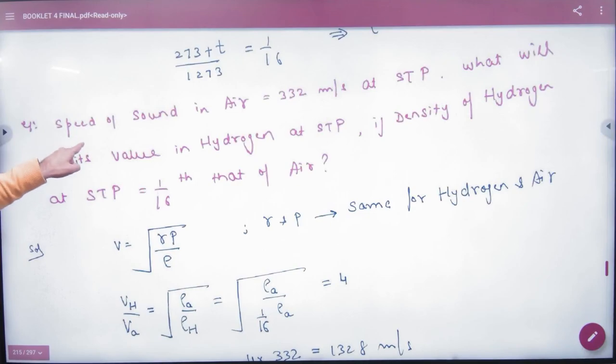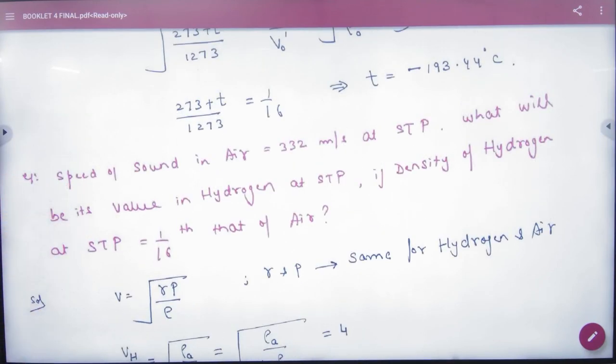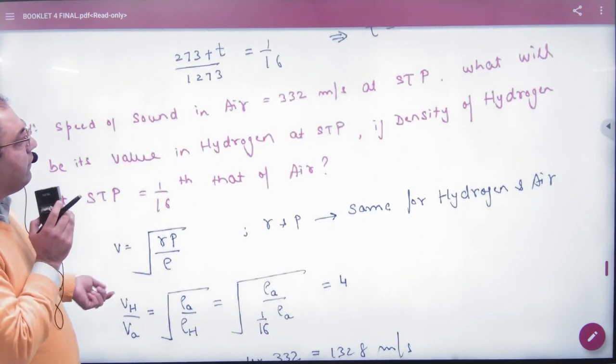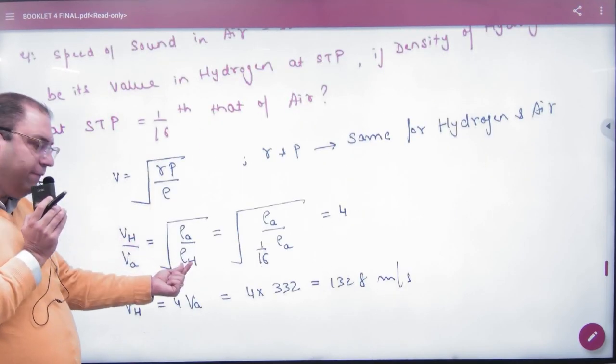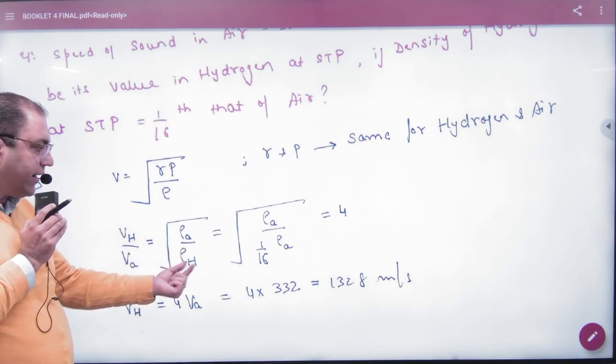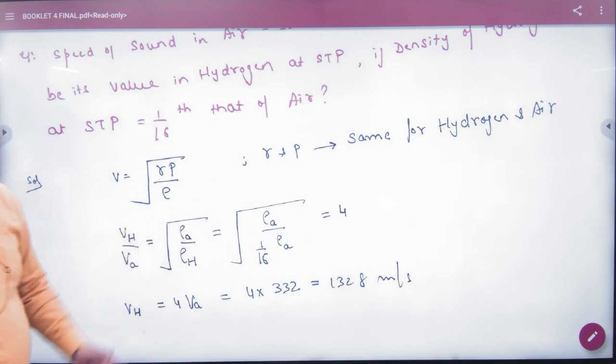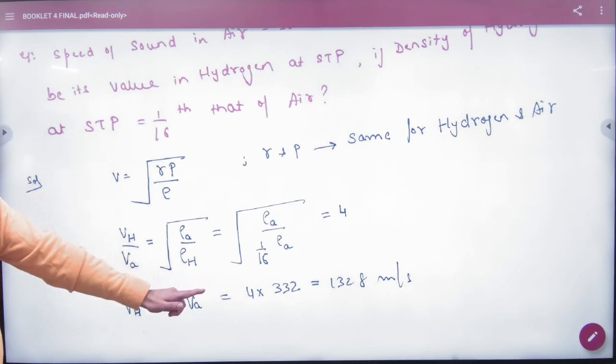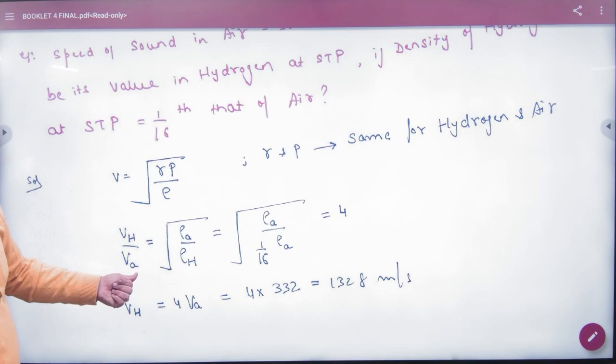To kaise temperature depend karna hai samajh mehra raha hai. Temperature se velocity kaise nikalegi clear hai. Question mein: jaise speed of sound in air given hai STP pe 332. What will be its value in hydrogen at STP? Density of hydrogen 1/16 that of air. To velocity inversely proportional to under root of density ka concept hai. To velocity, yeh velocity ki value hai hydrogen ki pehle, air mein itni hai. To aapko hydrogen ke andar density kya given hai: 1/16 that of air. Yaha se ratio pa gaya answer. Aapko air ke andar velocity pata hai 332 hai, to hydrogen ke andar bhi aa gaya. To kaise yeh formula use kiya, kya samajh mehra hai, density wala. Point clear hai haan tak, density wala formula samajh mehra hai.